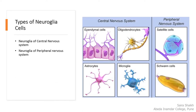The human nervous system is divided into two parts: the central nervous system and the peripheral nervous system. In the central nervous system, four types of neuroglia cells are present, named as ependymal cell, oligodendrocyte cells, astrocytes, and microglia.